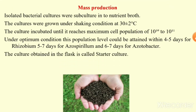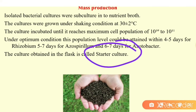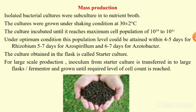The culture obtained in the flask is called the starter culture — the culture obtained in the flask is known as starter culture. For large scale production, inoculant from the starter culture is transferred into a large flask or fermenter and grown until the required level of cell count is reached.